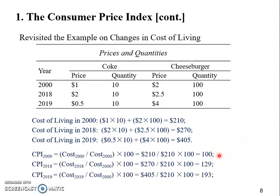Now we recalculate the Consumer Price Index. If we use the year 2000 as the base year, then the CPI in that year is still 100 — as stated before, the CPI in the base year is always 100. The CPI in 2018 is the cost of living in 2018 divided by the cost of living in 2000, so it's 270 over 210, which gives us 129. Previously, when the quantity of coke was 50, the CPI in 2018 was 140. Now it's 129. The CPI in 2019 is now 193, but previously it was 170.